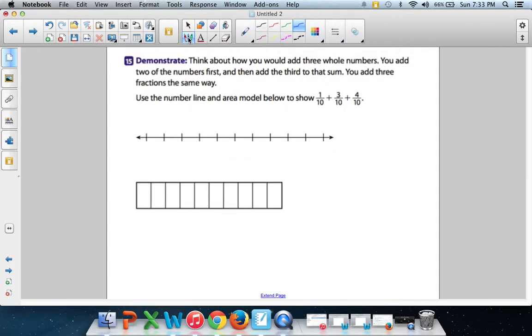Look at this. Think about how you would add three whole numbers. You add two numbers first and then add the third to that sum. You add three fractions the same way. Use a number line and area model to show 1/10 + 3/10 + 4/10. All right, let's do that.